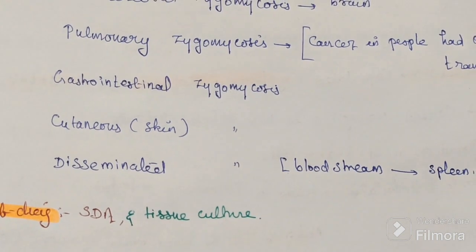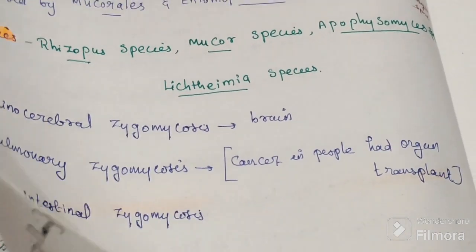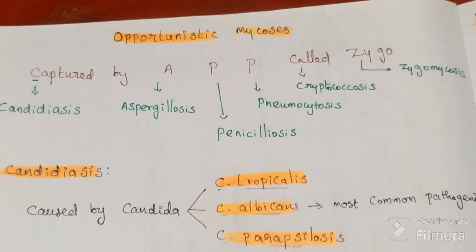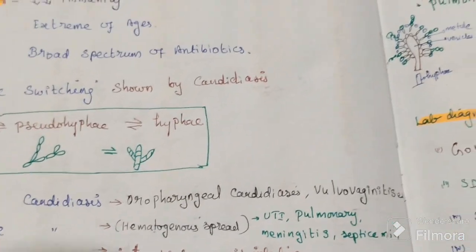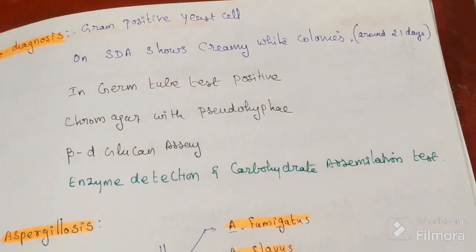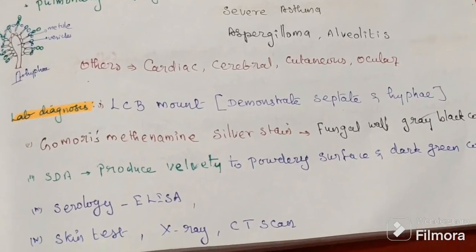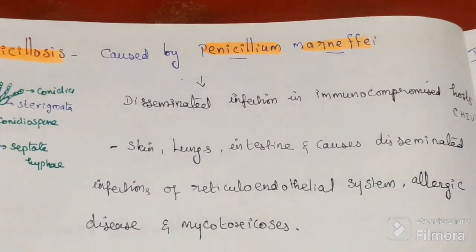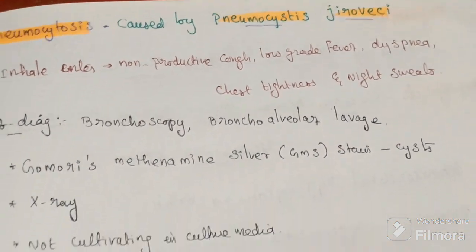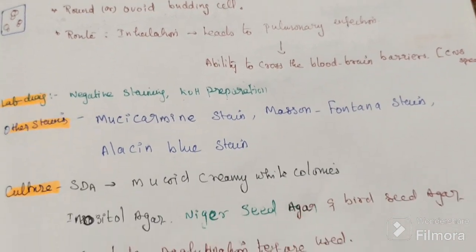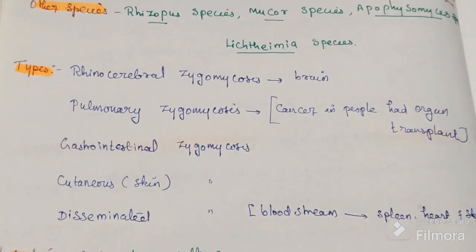For laboratory diagnosis of zygomycosis, Sabouraud dextrose agar and tissue culture are used. These are the various types of fungi causing opportunistic fungal infections: candidiasis, aspergillosis, penicilliosis, pneumocystosis, cryptococcosis, and zygomycosis. Thanks for watching.